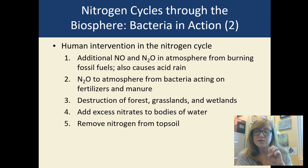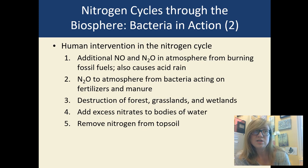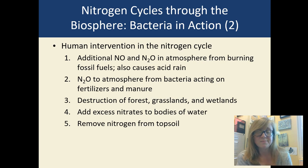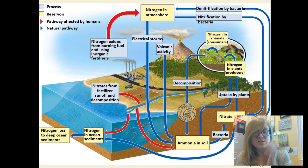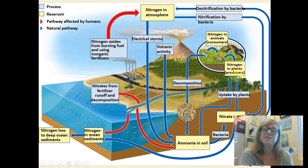When we destroy forests, grasslands, and wetlands, we get additional runoff and less nitrogen in our topsoil. We remove nitrogen from topsoil to make fertilizer, then add the fertilizer, and those excess nitrates go into bodies of water causing eutrophication. Eutrophication means a big algal bloom — algae grow out of control because of the nitrogen, then die, bacteria digest the algae and consume all the oxygen from the pond, and the fish die.